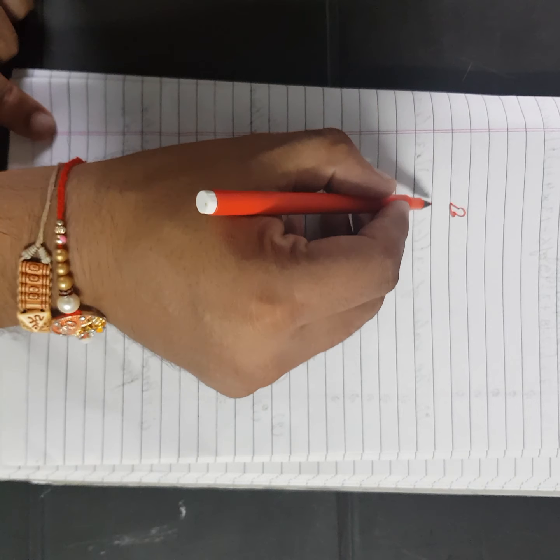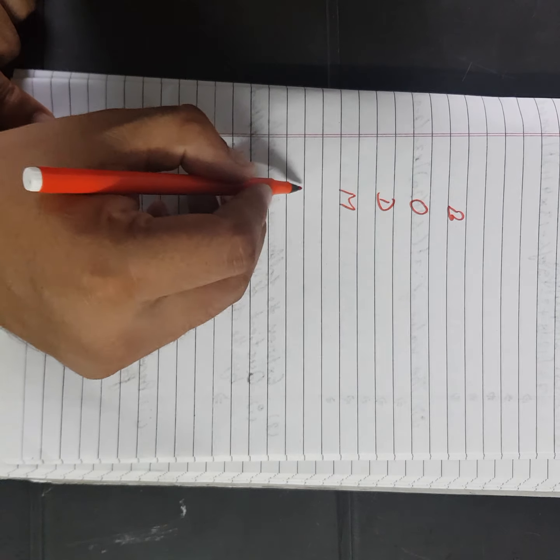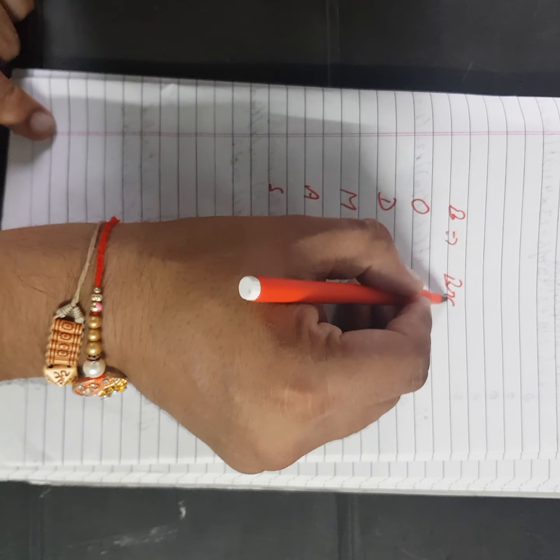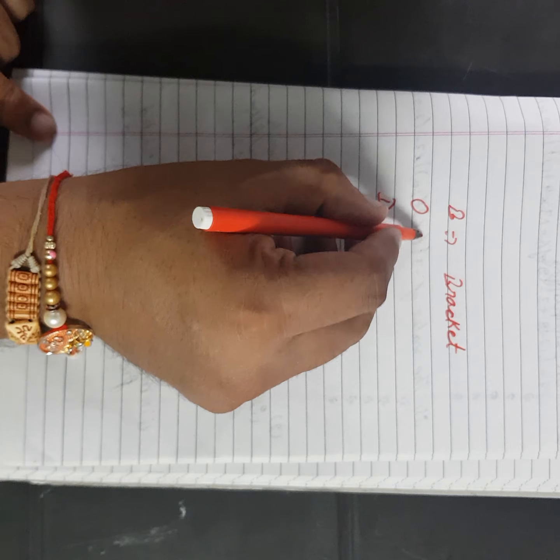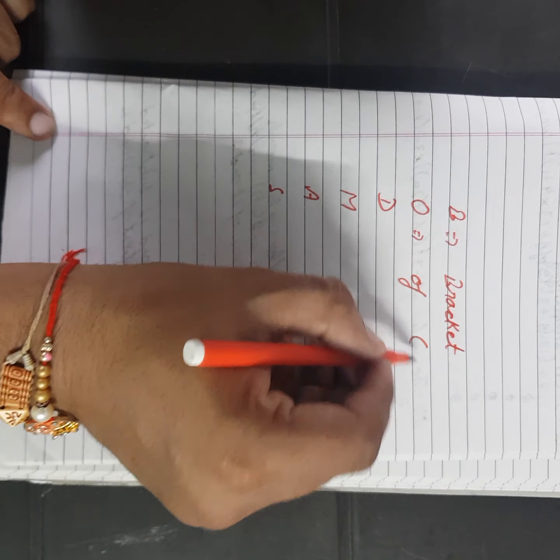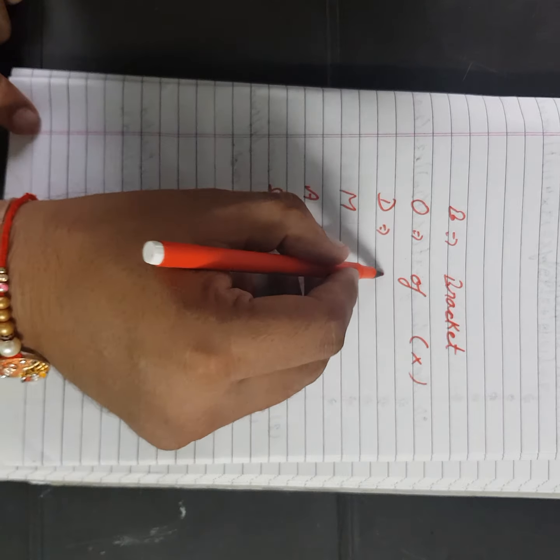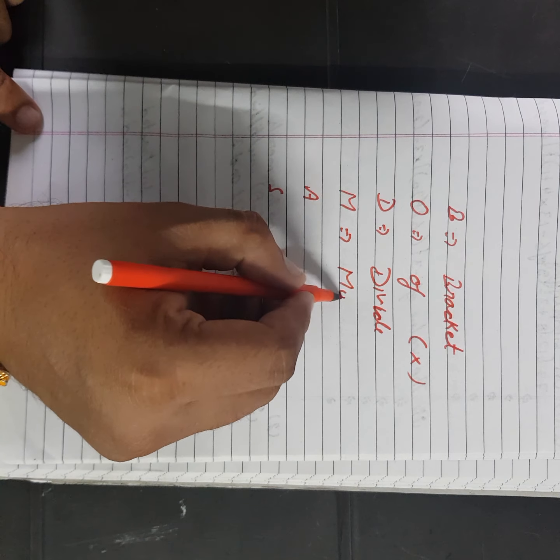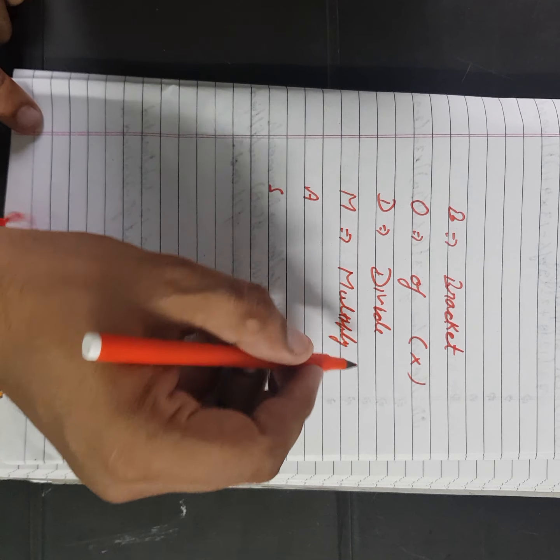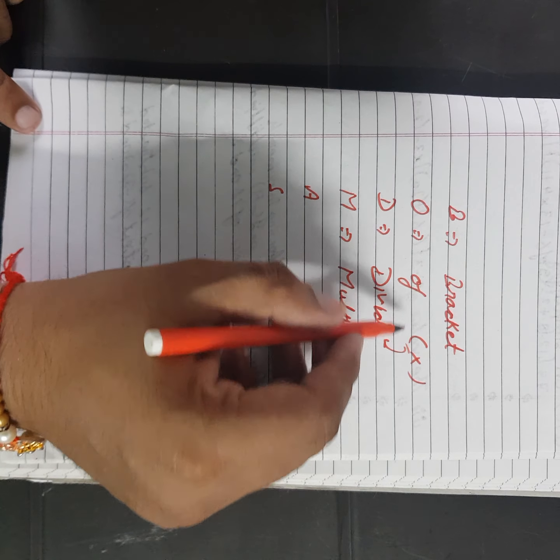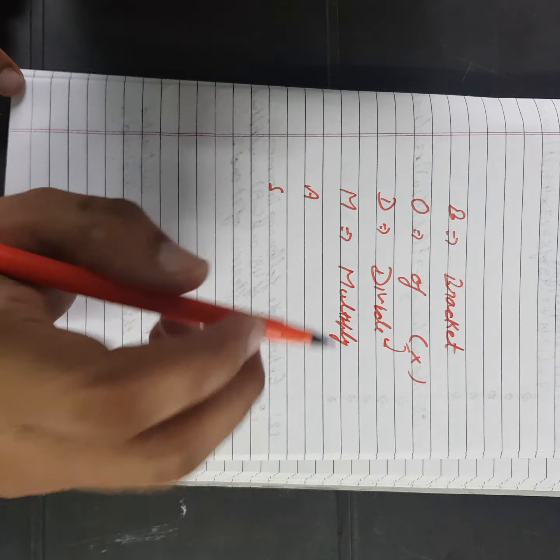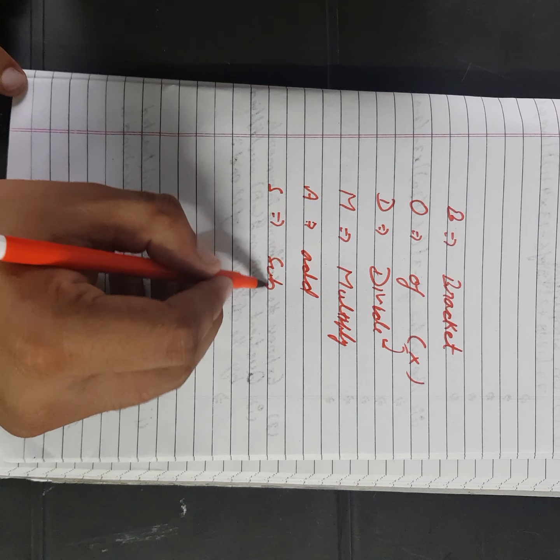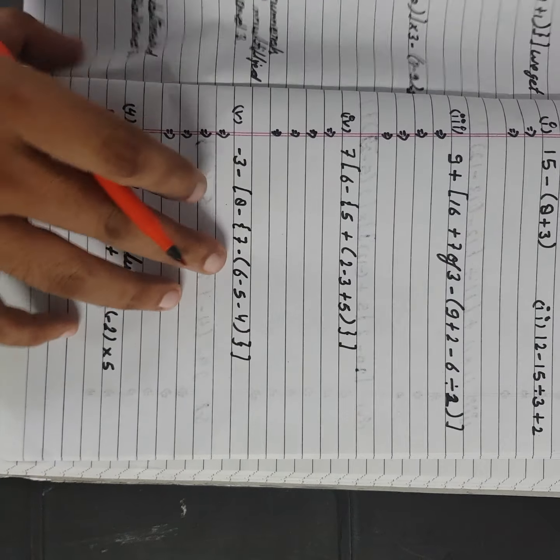BODMAS - write it somewhere. B for bracket, you might have solved these questions in class fifth. O means of, of is also a multiplier but you will have to solve it first. D means divide, M means multiply. When of and divide are written you will solve of first. When divide and multiply written you divide first. A is for add and S is for subtract. Try to remember these things.